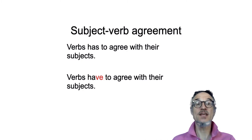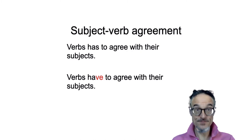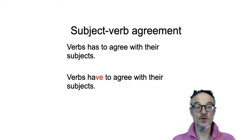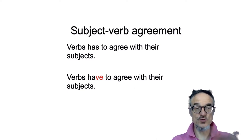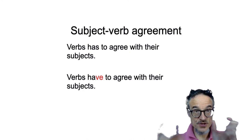Third person singular — he, his, her, it — is different to third person plural, 'they'. So: 'he has', 'they have'; 'it is', 'they are'. So you need to watch out for those. As you edit and change things, you need to change both.